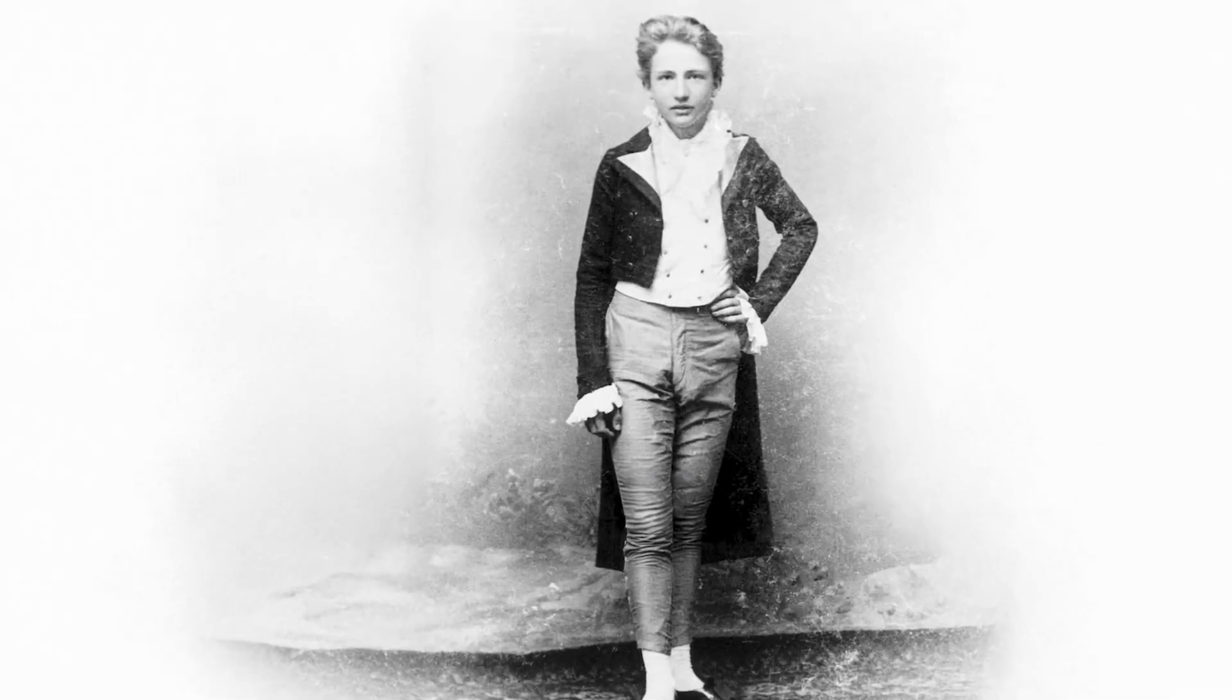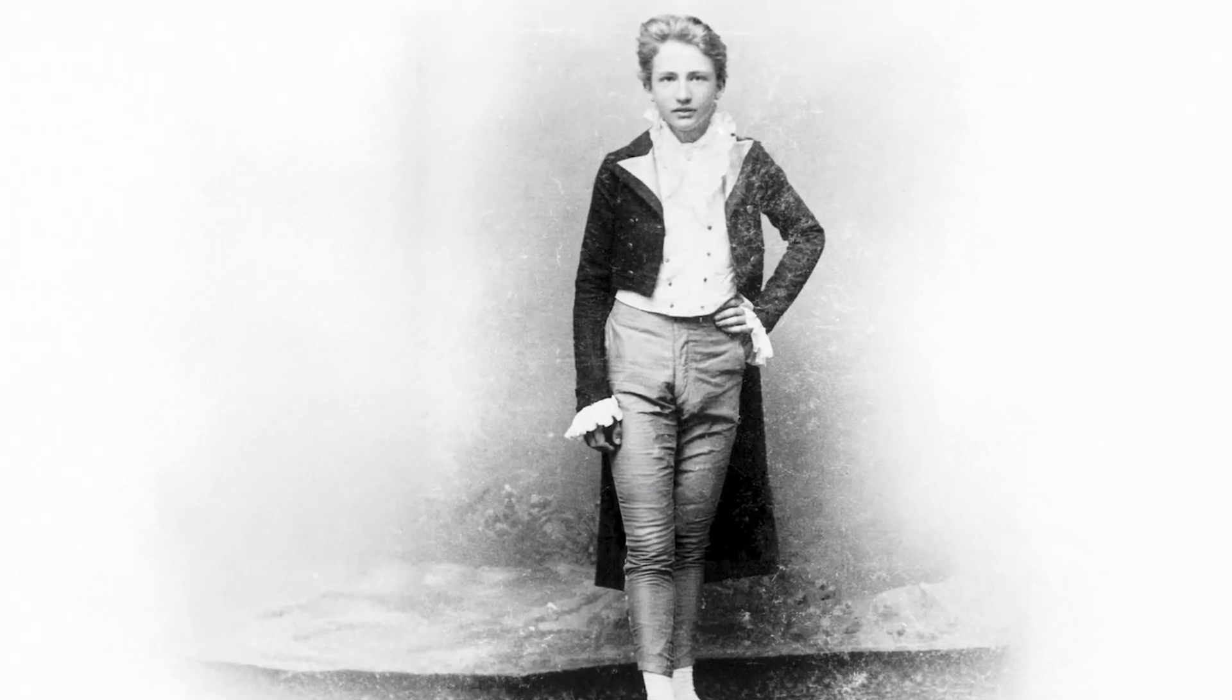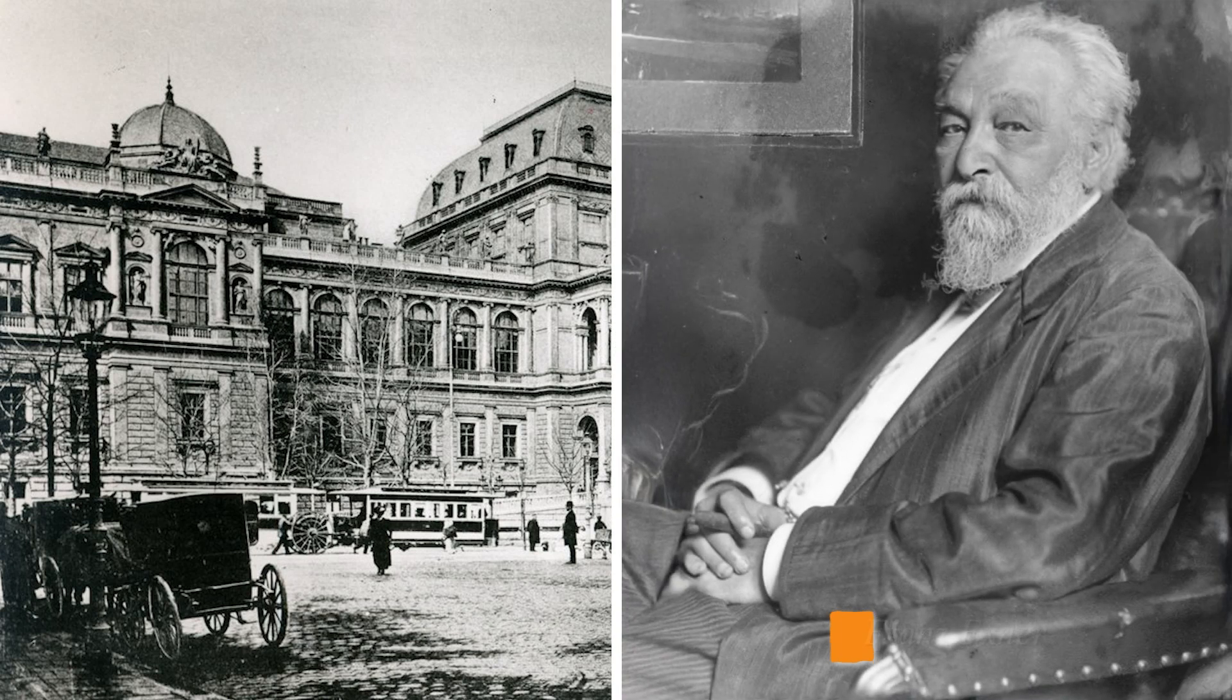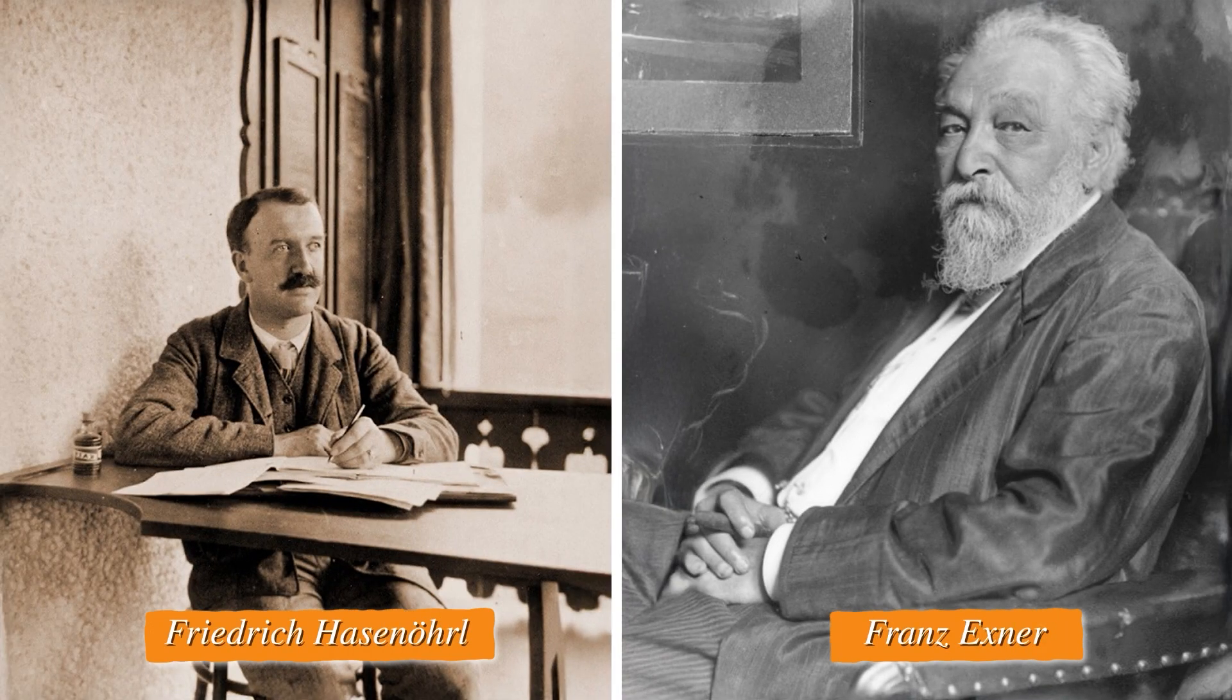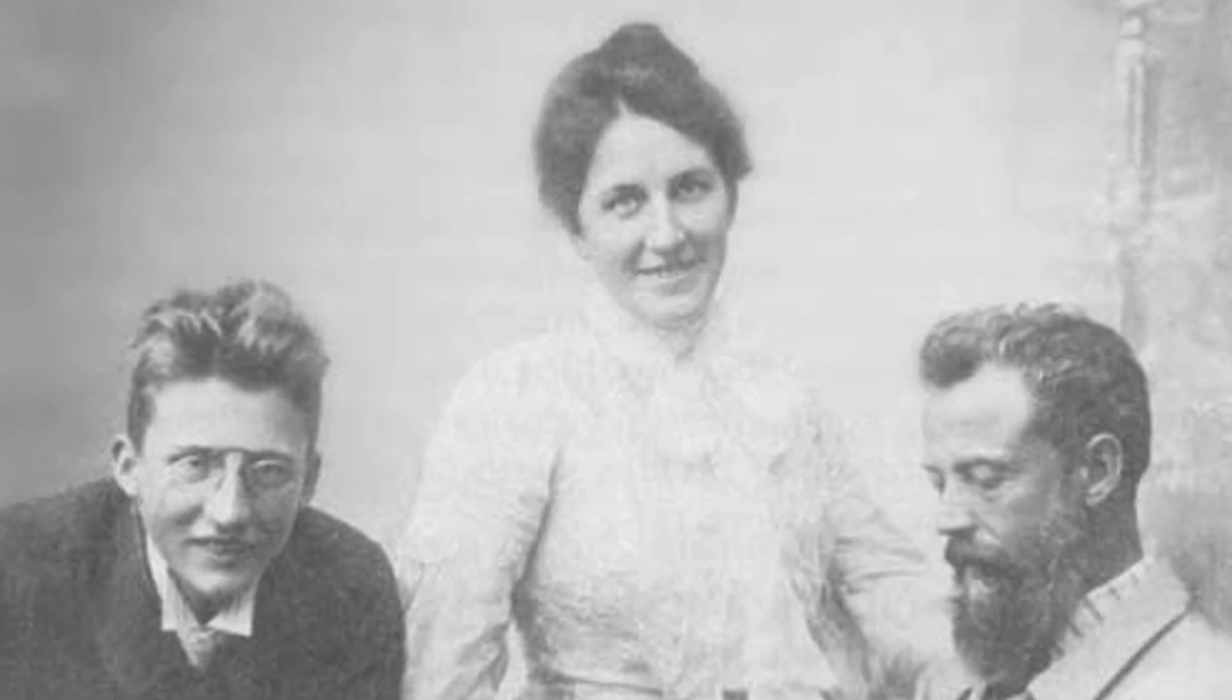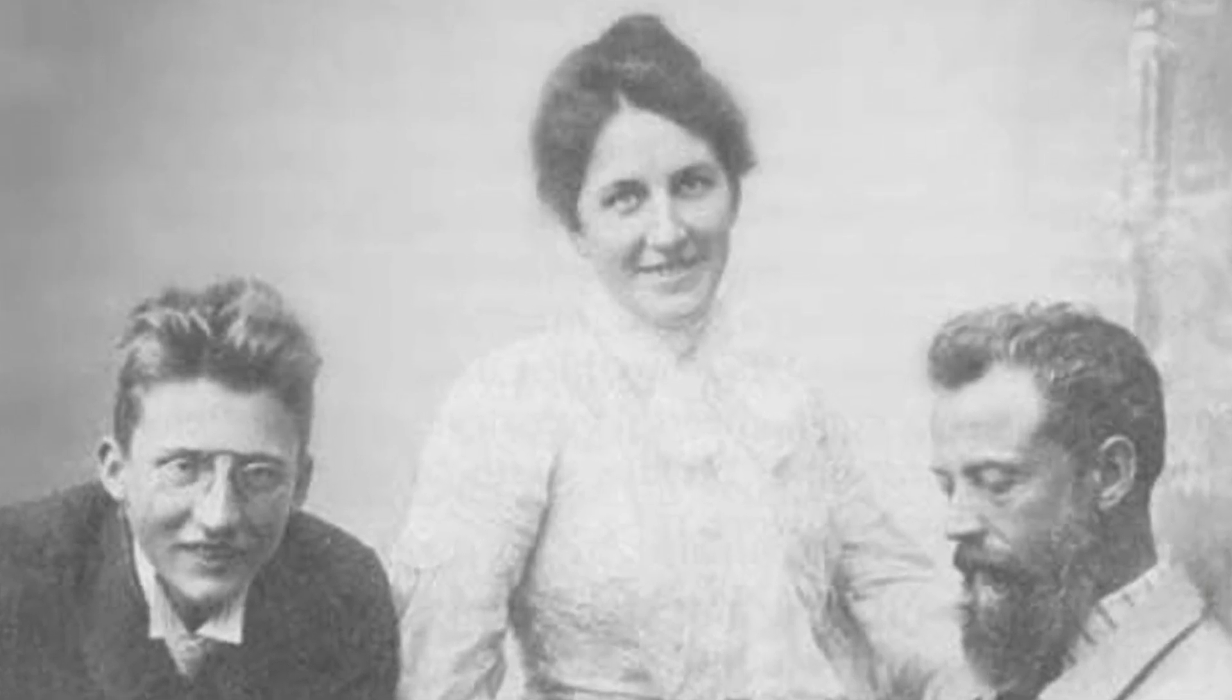When he entered the University of Vienna, Schrödinger stepped into the world of theoretical physics. There, he met two mentors who would shape his future, Franz Exner and Friedrich Hasenöhrl. These professors didn't just teach him formulas, they encouraged him to ask big questions, challenge assumptions, and explore the mysteries of the physical world.